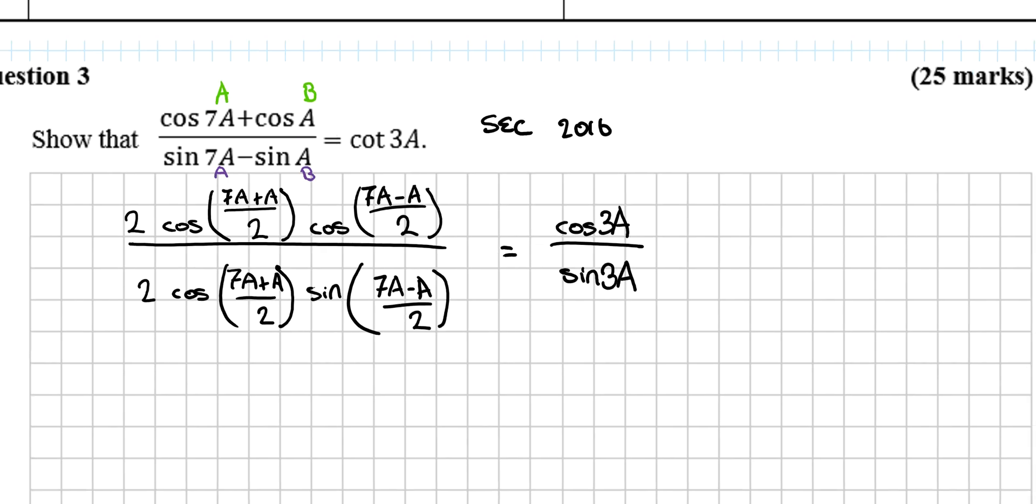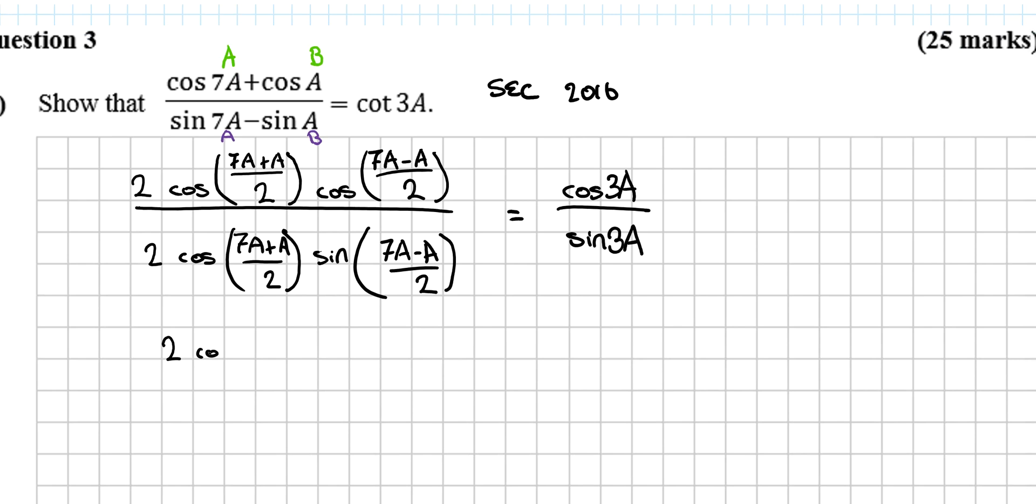And we then continue to simplify the left hand side. So, you get 2 cos, this would be 8a on the top line, divided by 2, is 4a, cos 7a minus a is 6a, divided by 2, would be 3a, all over 2 cos 7a plus a would be 8a, divided by 2, cos 4a, sine 7a minus a would be 6a divided by 2, is 3a. Cos 3a is equal to cos 3a over sine 3a.